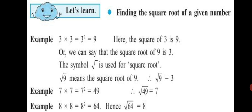Look at more examples. 7 squared is 49, which means the square root of 49 equals 7. Similarly, 8 into 8 equals 64, so the square root of 64 equals 8. Can you tell me what is the square root of 36? Which number multiplied by itself gives 36? Yes — 6 into 6 is 36, so the square root of 36 equals 6. The square root of 25 is 5, since 5 into 5 is 25. This way we can easily find square roots of two-digit numbers.